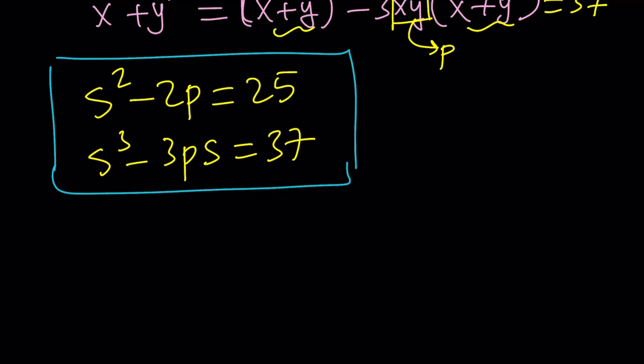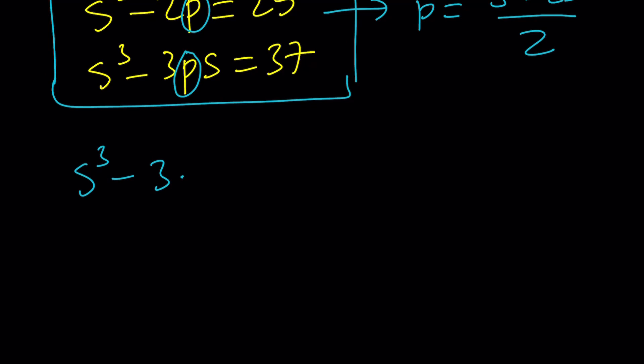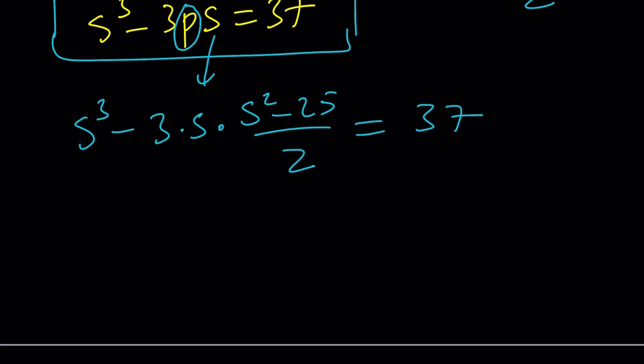Let's go ahead and isolate p from here. p is s squared minus 25 divided by 2. If I put the p on the right hand side, add 2p and then subtract 25 and divide by 2. Now, we can go ahead and plug it into the second equation because it only has 1p. And that's going to be good. So s cubed minus 3 times s times p, and p is going to be replaced with s squared minus 25 over 2. And the whole thing is equal to 37. You see how I was able to get a single variable equation.